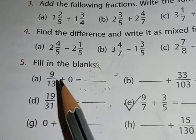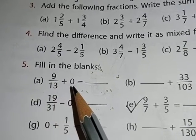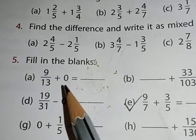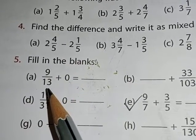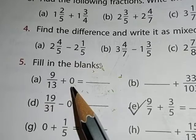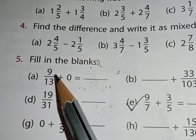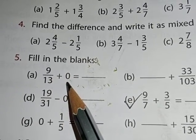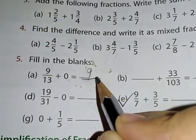Question number 5a: 9 upon 13 plus 0. You see that here we have one side fraction and the other side 0. Keep in mind that when in any fraction we add 0, we get that same fraction in our answer.